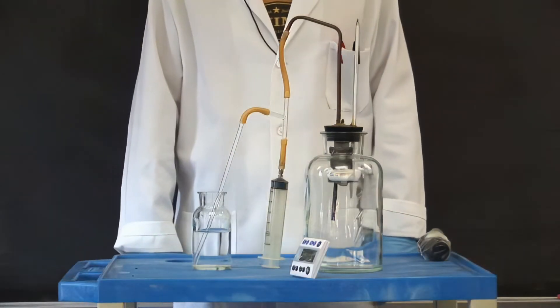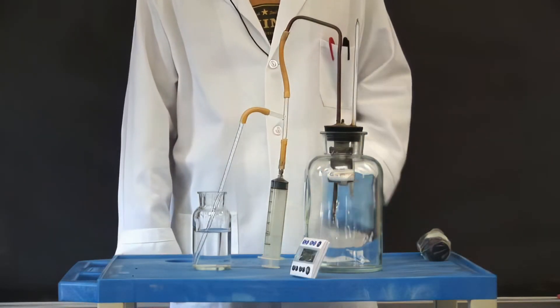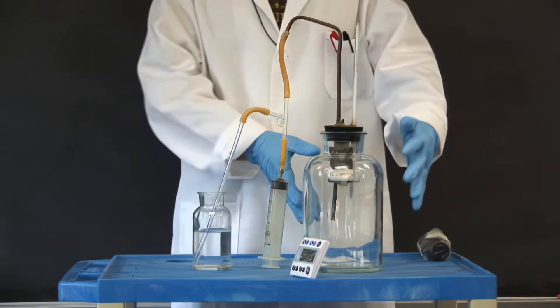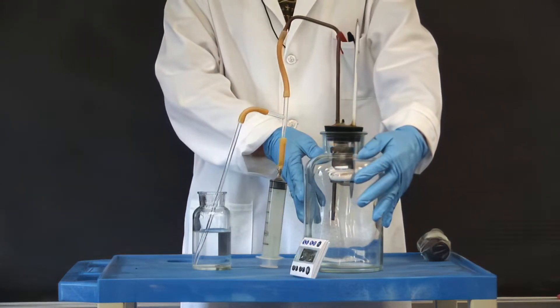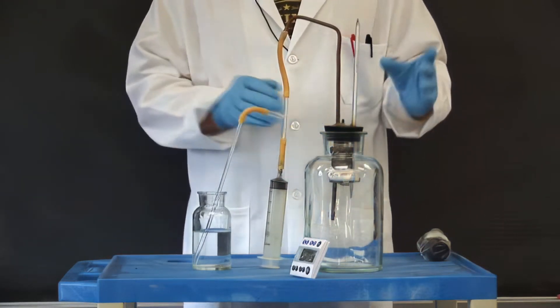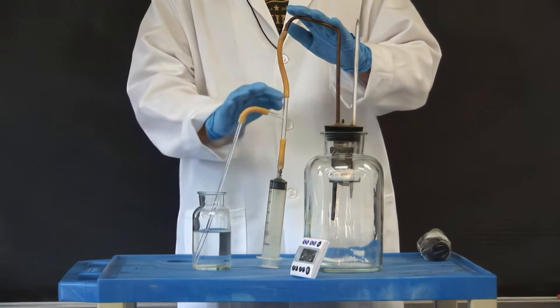To measure the basal metabolic rate of the rat in the classic way, we have our chamber, which is this device right here, sealed and connected to an improvised manometer.